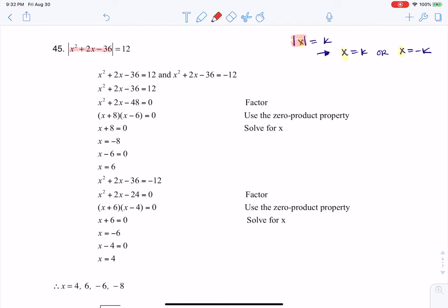So what we're going to do is we're going to take what's inside that grouping symbol. We're going to set it equal to the number on the right side of the equation and the opposite of the number on the right side of the equation. So you see me setting it equal to 12 and then negative 12.